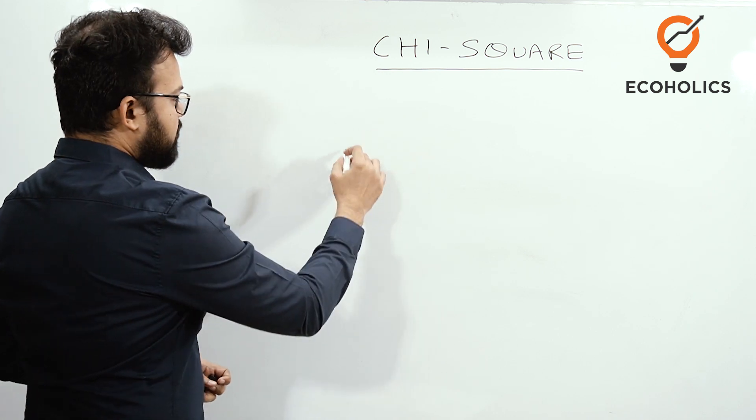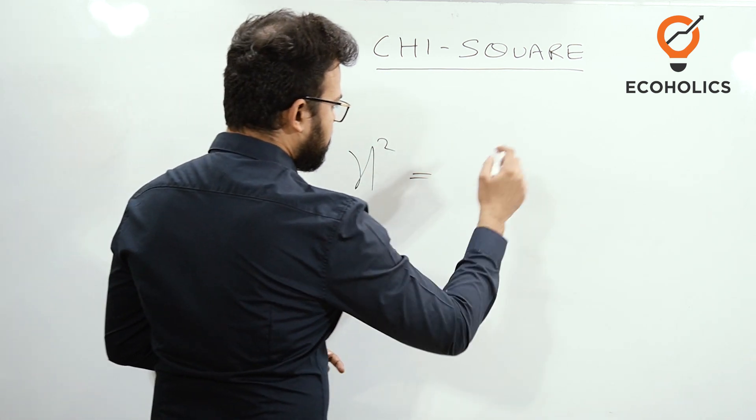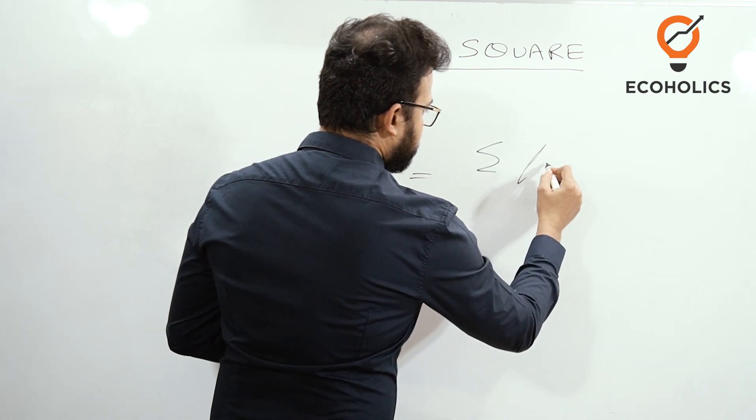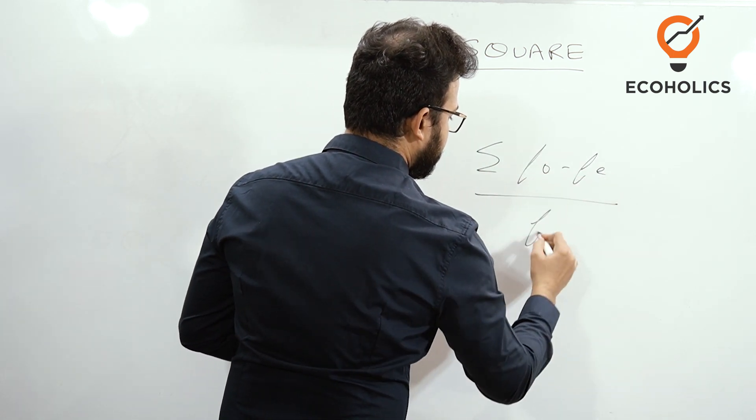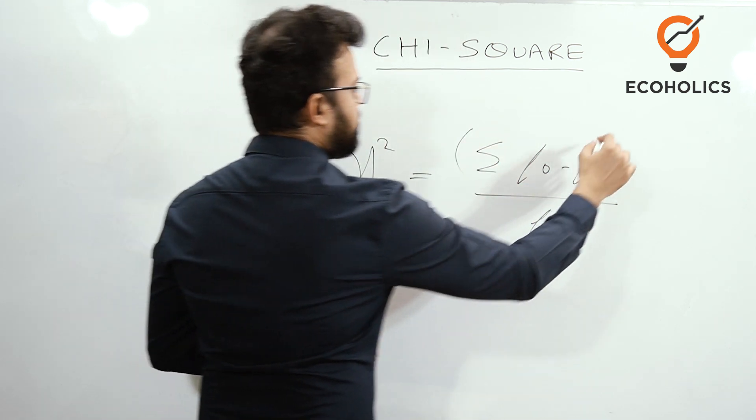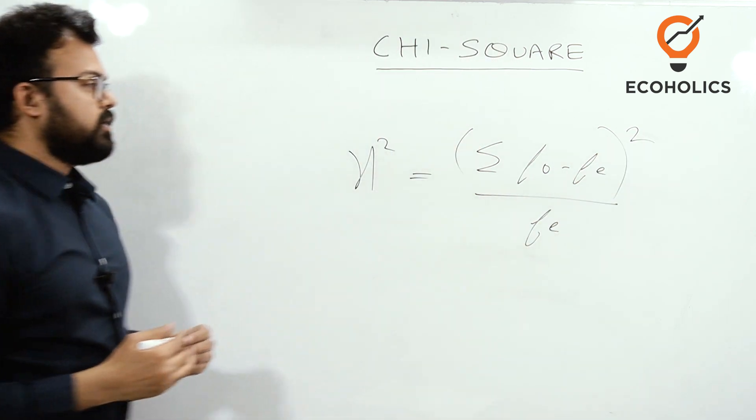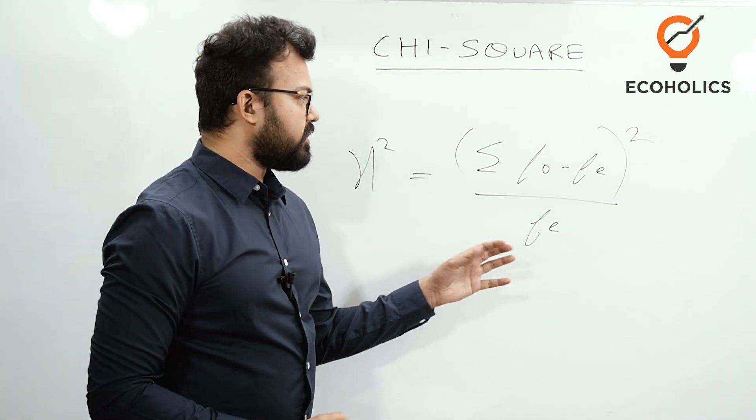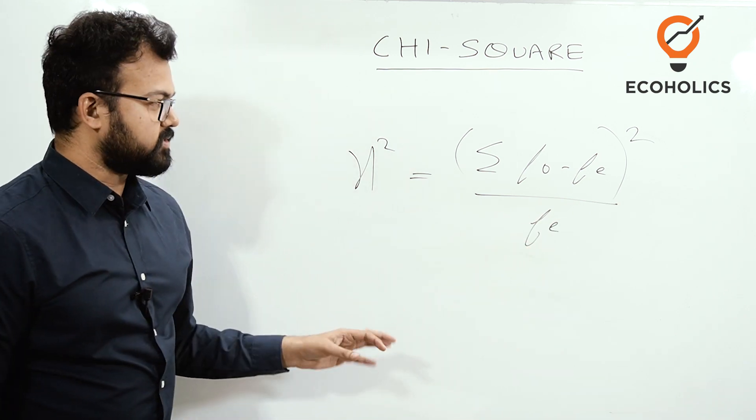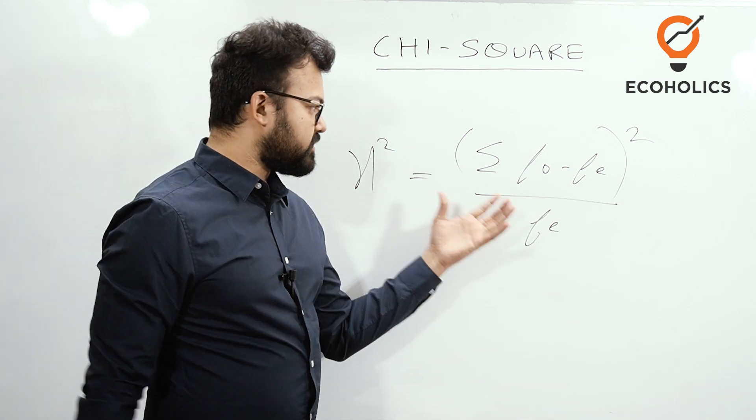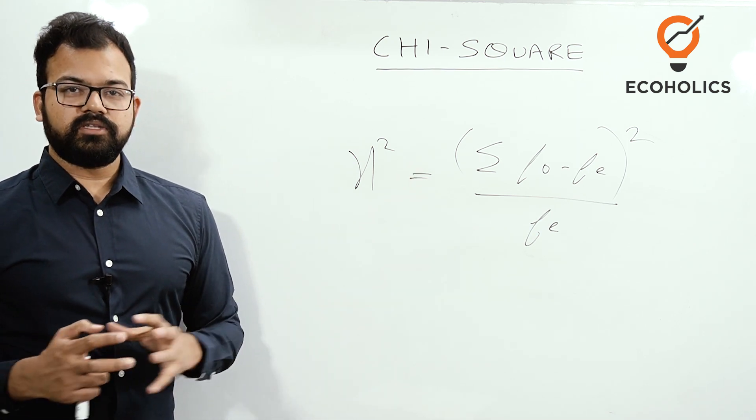If you want to see the chi-square formula, it is generally referred as: chi-square equals summation of (f0 minus fe) whole squared divided by fe. This is the formula of chi-square where observed minus expected frequency divided by expected frequency. When we make a table, we calculate it and judge the value of chi-square.